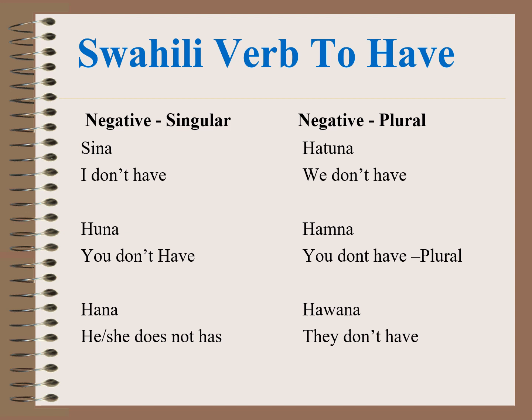Negative singular and negative plural of the verb to have: Sina, meaning I don't have. Hatuna, we don't have. Huna, you don't have — singular. Hamna, you don't have — plural. Hana, he or she does not have. Hawana, they don't have.